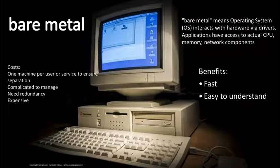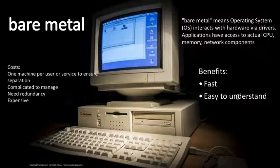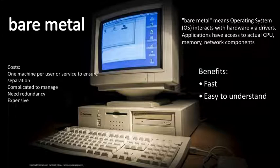Back in the day we started with bare metal computers — a standard desktop or server with an operating system running an application that uses all the hardware. The benefits are that it's fast and relatively simple to understand: there's a CPU, maybe a GPU, some disk, and a monitor — things you can physically interact with.